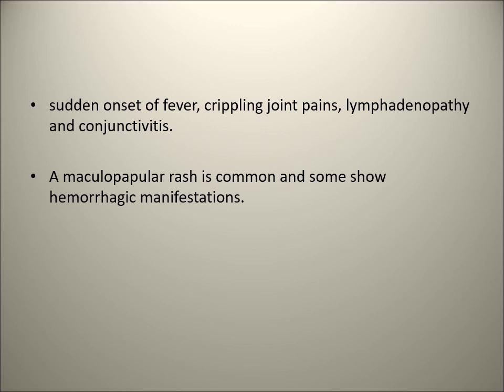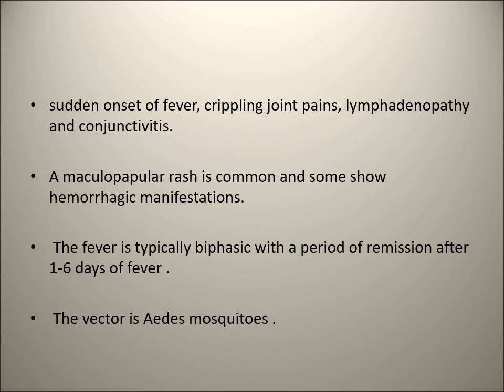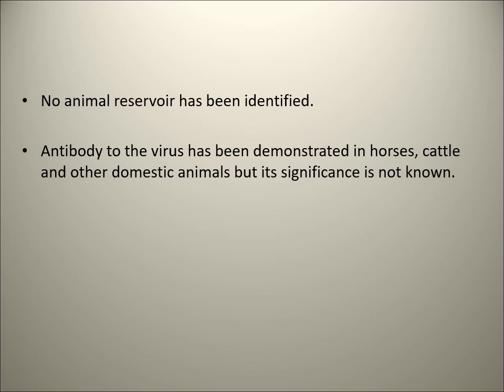The joint pain in Chikungunya is severe polyarthritis - multiple joints are involved - and it lasts for a very long duration, even going into months. The fever and other symptoms resolve but the joint pain remains. This is an important differential from Dengue, which also presents with joint pain and similar features. Additional features include lymphadenopathy, conjunctivitis, and maculopapular rashes. Hemorrhagic complications are common in Dengue but not so common in Chikungunya. Fever is typically biphasic with a period of remission. Vector is Aedes mosquito - both Aedes albopictus and Aedes aegypti.